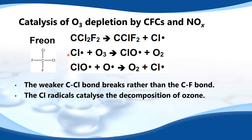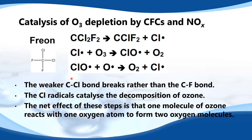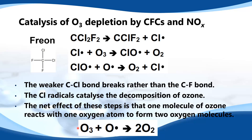In the next two steps, the chlorine radicals catalyze the decomposition of ozone. The net effect is that one molecule of ozone reacts with one oxygen atom to form two oxygen molecules, represented by the equation: O₃ + O → 2O₂.